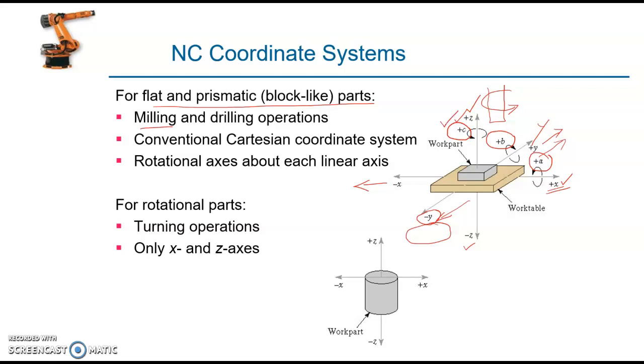And the second part is that for turning operations, that is the rotational parts, we have only two axes, that is X axis and Z axis. The axis in which the workpiece is rotated is the Z axis. And the tool feed movement axis is the X axis, that is the depth of cut. We are giving the depth of cut in X axis.